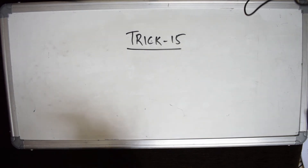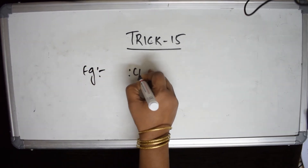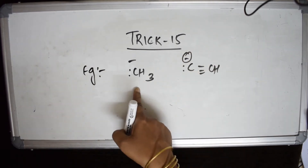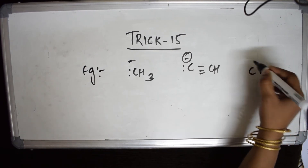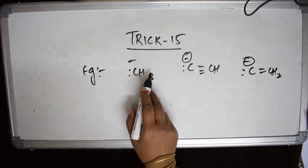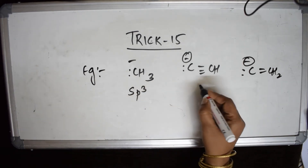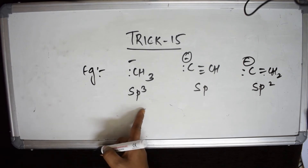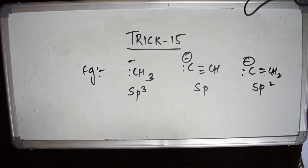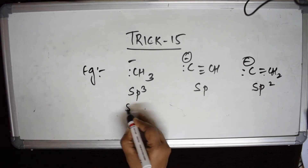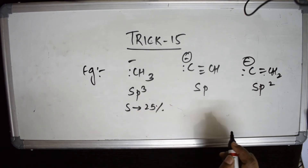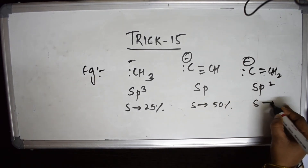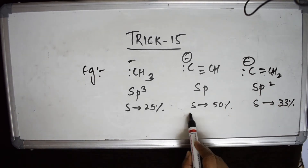For example, suppose the question gives three anions: one with a single bond (sp³ hybridization), one with a triple bond (sp hybridization), and one with a double bond (sp² hybridization). In sp³, s-character is 25%; in sp, s-character is 50%; and in sp², s-character is 33%.